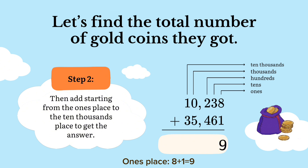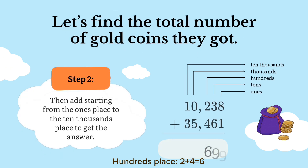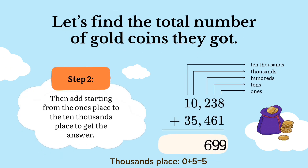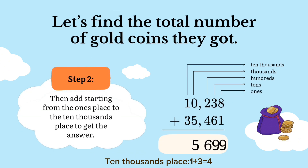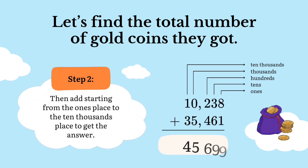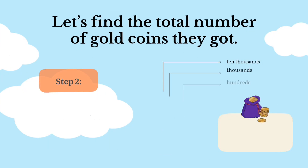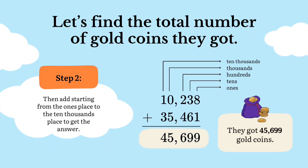Ones place: 8 plus 1 is equal to 9. Tens place: 3 plus 6 equals 9. Hundreds place: 2 plus 4 is equal to 6. Thousands place: 0 plus 5 is equal to 5. Ten thousands place: 1 plus 3 equals 4. So the sum of 10,238 and 35,461 is 45,699. They got 45,699 gold coins.